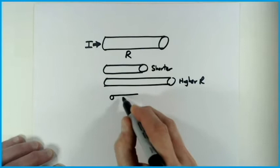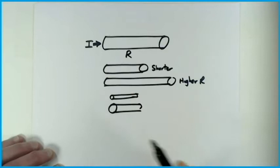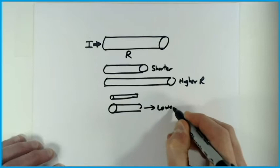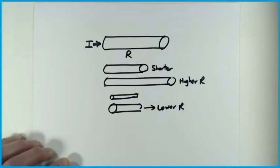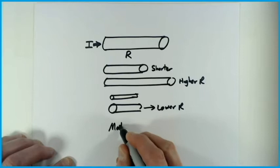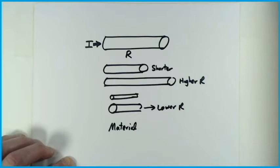It also depends on the cross-sectional area. Imagine a very thin wire versus a very thick wire — which one is it easier to send electrons through? Clearly the thick one will have the lower resistance. So the bigger the cross-sectional area, the lower the resistance.